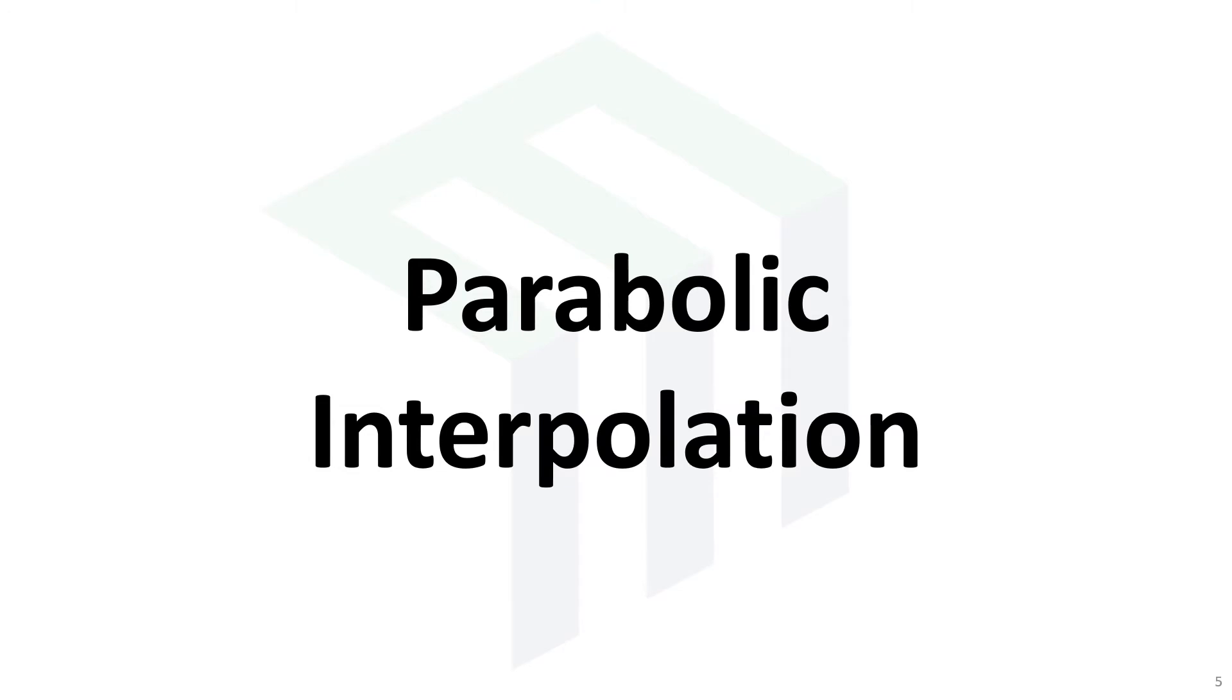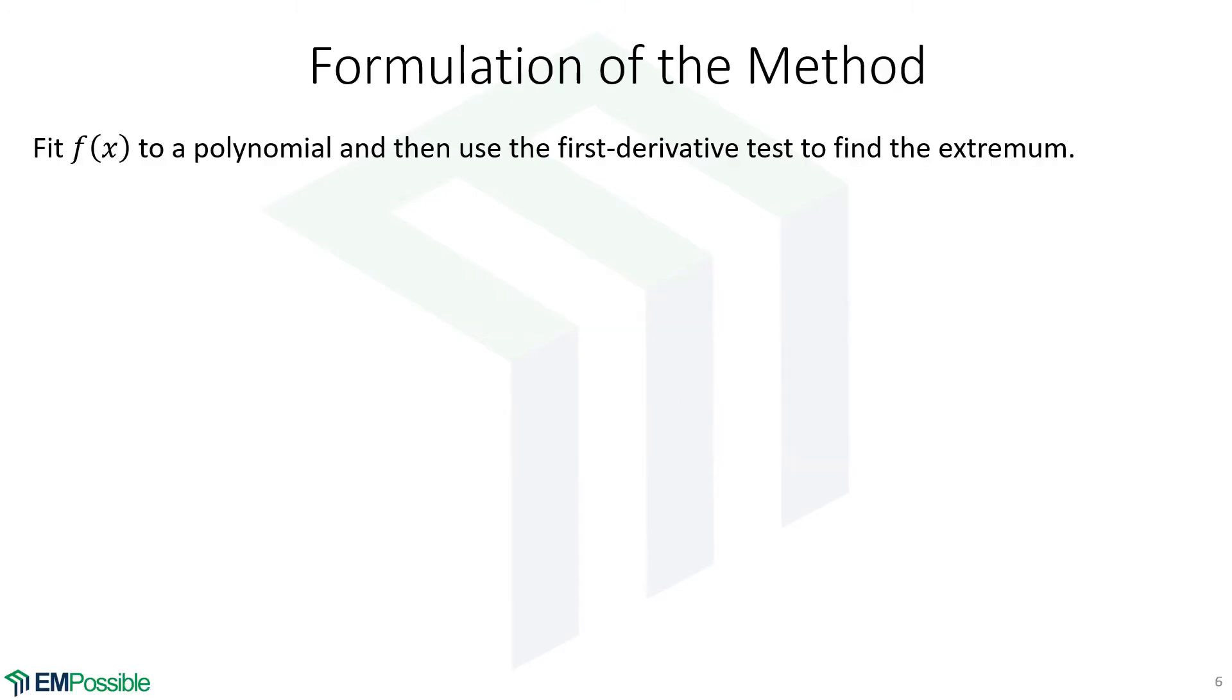Parabolic interpolation. This method is simple. We have some function, and we know generally maybe where the extremum is. So what we'll do is we will fit a polynomial to that, hopefully spanning that extremum, and then use the first derivative test on that polynomial to find the extremum.